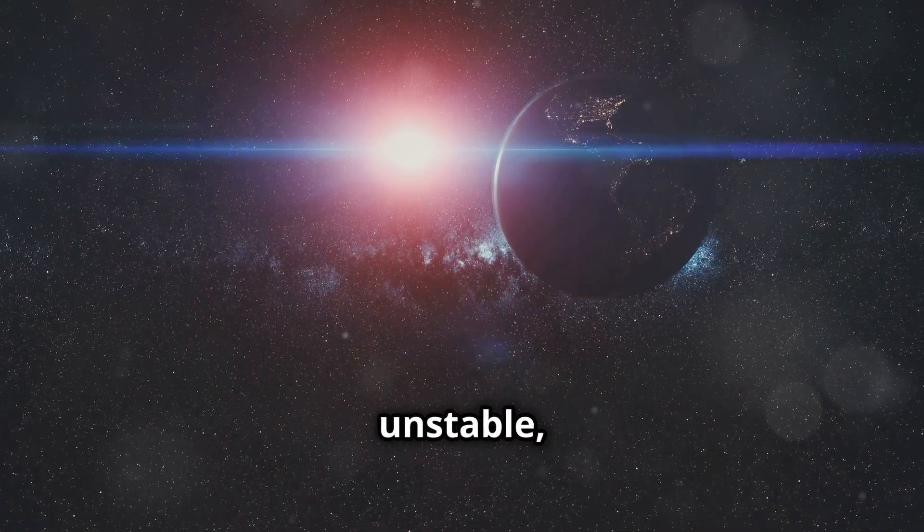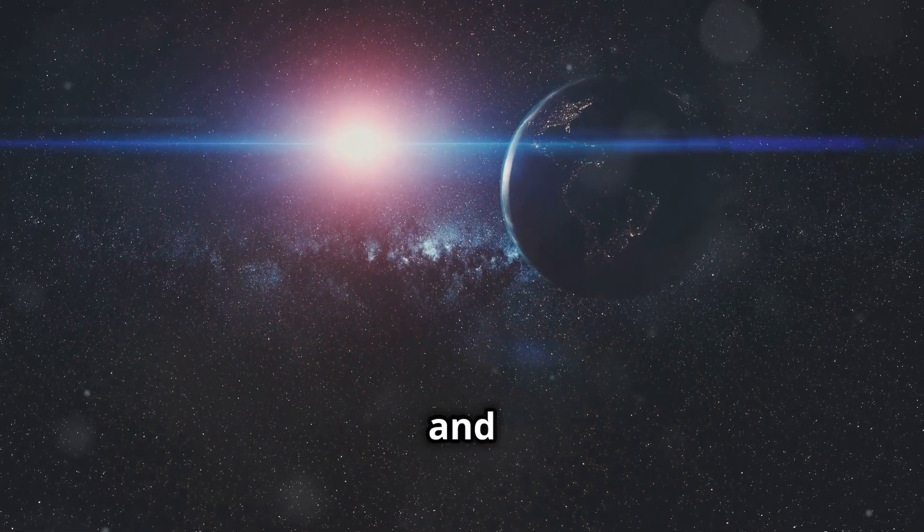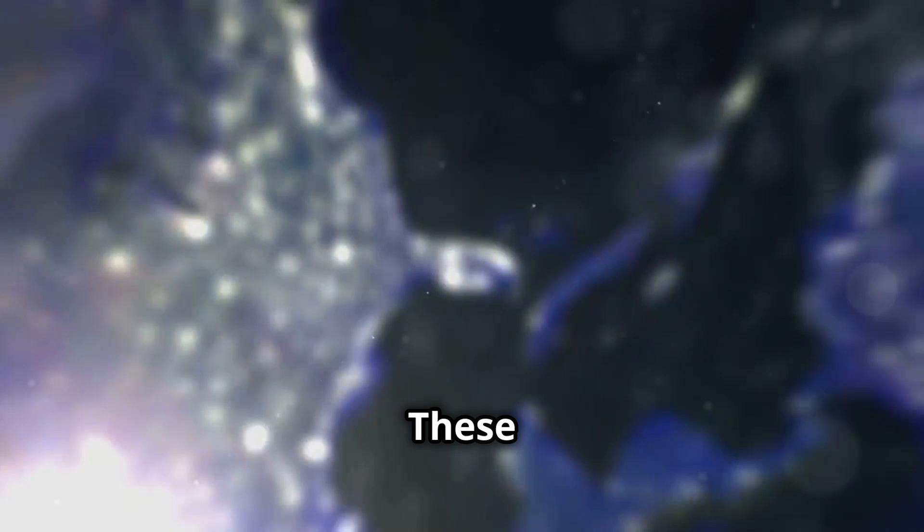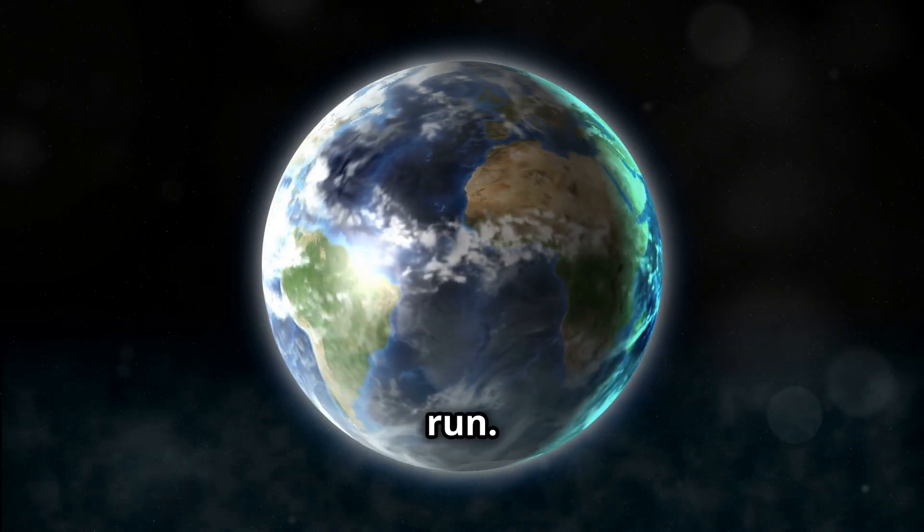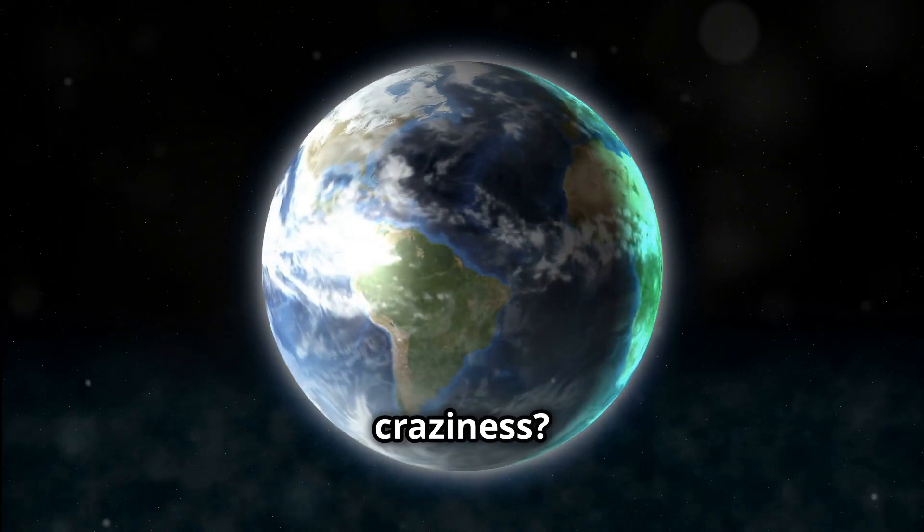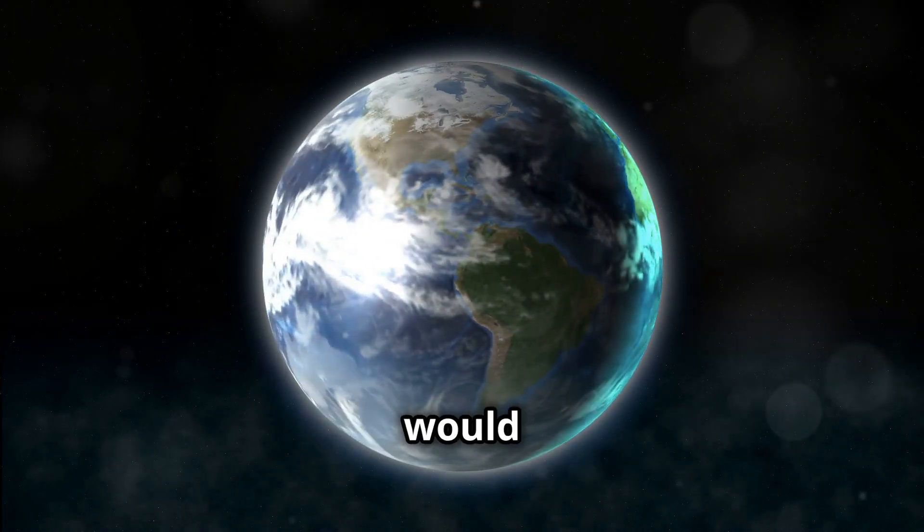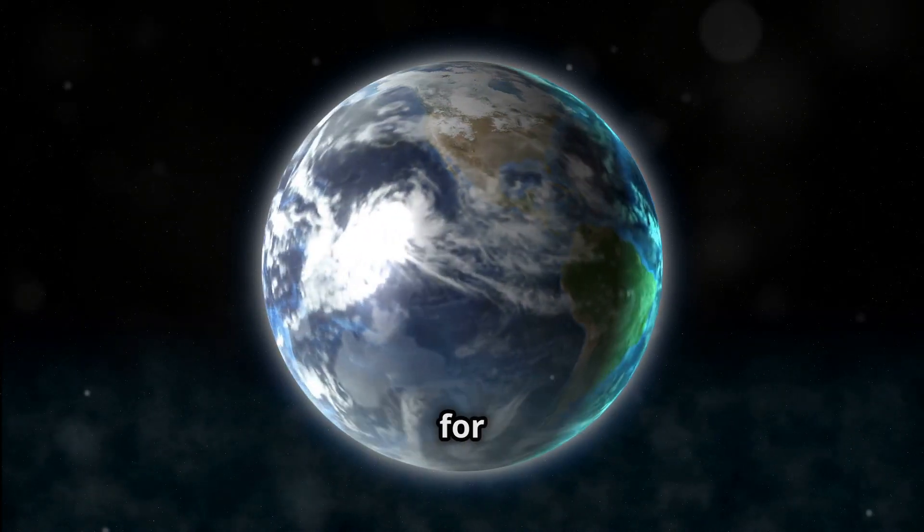The moon's orbit would become more unstable, affecting tides and possibly even marine life. These changes could even affect the tides and the Earth's rotation in the long run. Can you imagine the craziness? The disappearance of Venus would bring unimaginable consequences for our planet.